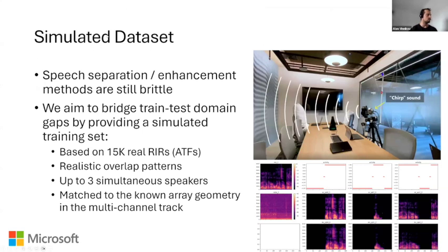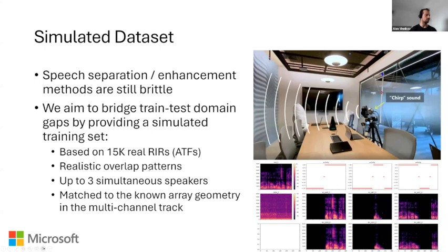The training set, which is simulated, is based on real recorded room impulse responses. We went across many rooms, recorded these and estimated what the actual room response looked like, then used this to simulate the dataset. We hope this dataset will unlock deep learning methods, which we think currently haven't shown their full potential because of training-test gaps. We hope to close those gaps with the real RIRs, and we simulate up to three speakers with somewhat realistic overlap patterns. This is available for you for training.